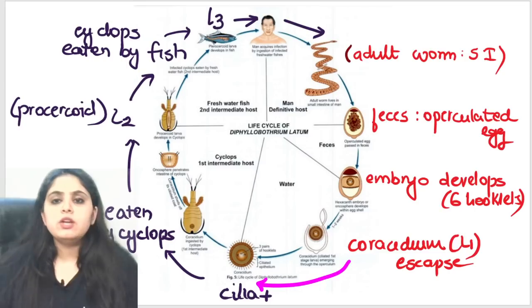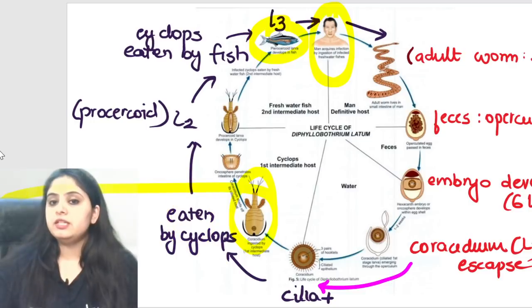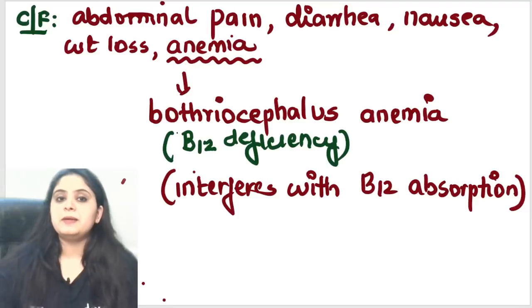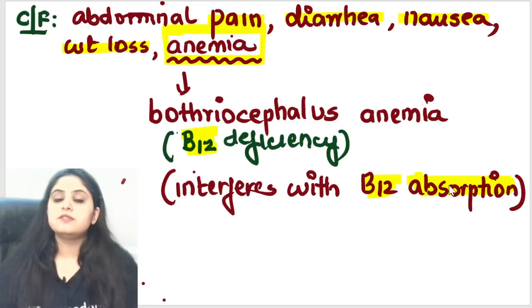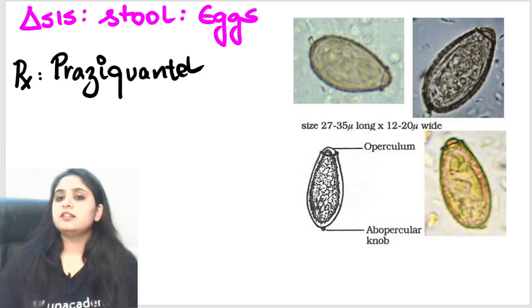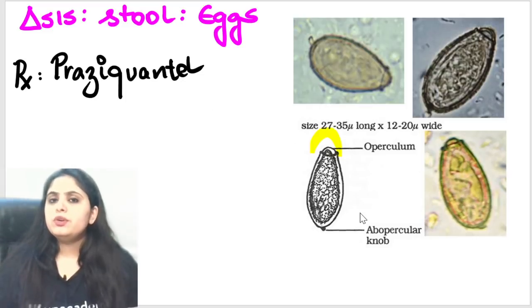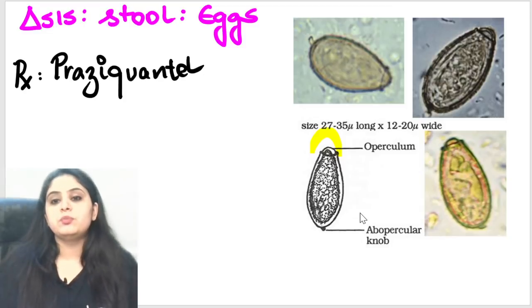Looking at another diagram of this life cycle, you can identify it by the presence of man, Cyclops, and fish. How does the patient present? Intestinal features include abdominal pain, diarrhea, nausea, and weight loss. A very important point: Diphyllobothrium latum interferes with the absorption of vitamin B12, leading to B12 deficiency and megaloblastic anemia. The egg is a classical operculated egg — like the trematodes, it has a lid.